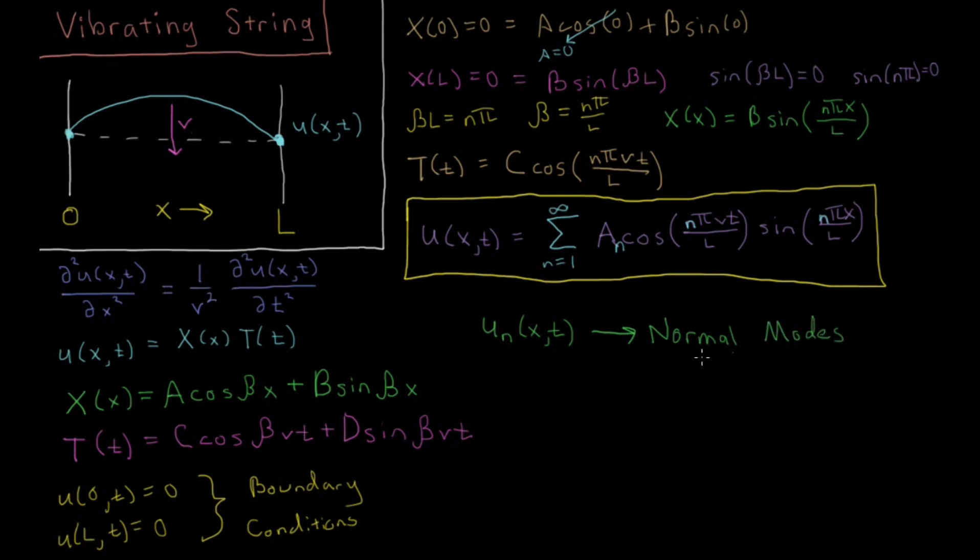Basically, we can take any function which satisfies the conditions here, any function which is zero here and here and has any value we want in between, and we can decompose it into a sum of these normal modes. So we can say that these normal modes can represent any function within the space that they span. If you wanted to get what those individual coefficients are, because they only vary for these A sub n, that would be the equivalent of a Fourier series. So if you know what a Fourier series is, you would get the individual values of these A sub n that way.